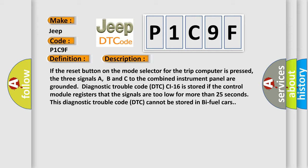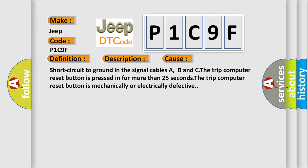This diagnostic error occurs most often in these cases: Short circuit to ground in the signal cables A, B, and C. The trip computer reset button is pressed in for more than 25 seconds. The trip computer reset button is mechanically or electrically defective.